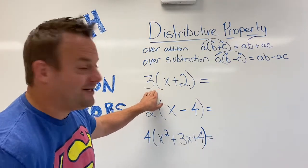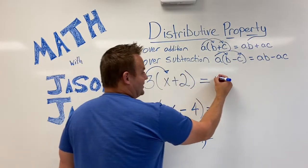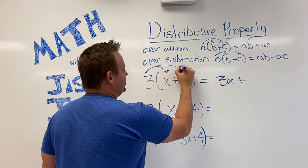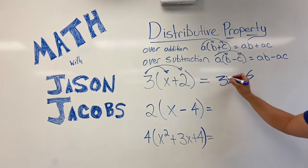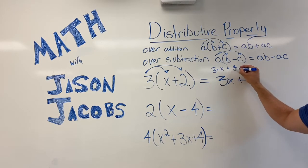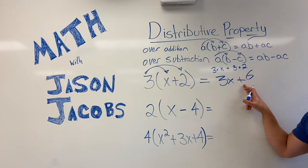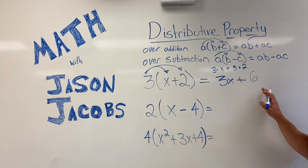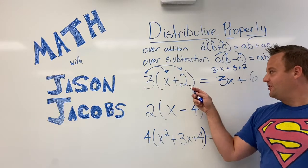This is the distributive property over addition. So we go three times x, well that's 3x plus three times two. Three times two, which is six. So they might make you do this: three times x plus three times two, and then go to that. My six looks a little weird because I was writing three at first. So 3x plus 6. Again, the three distributes to the x and the three distributes to the two.